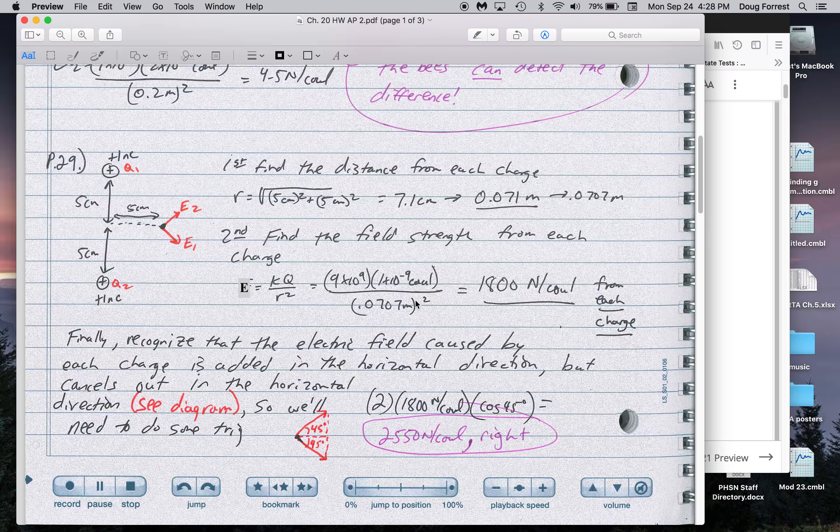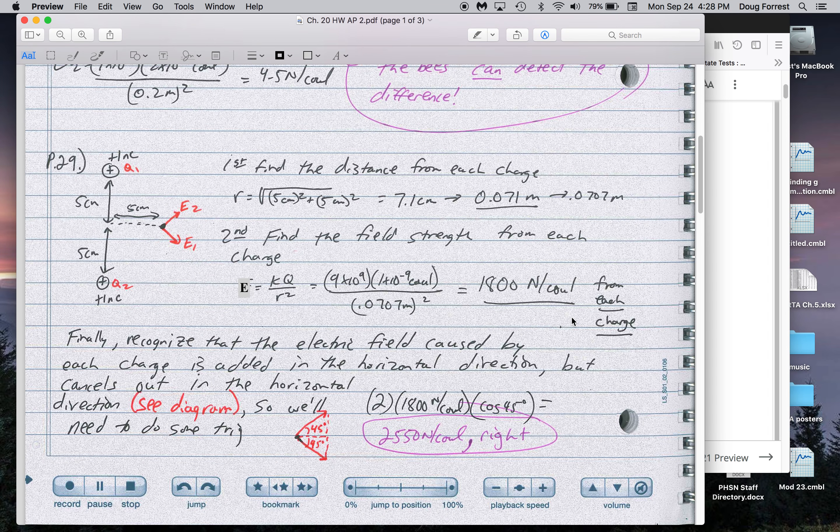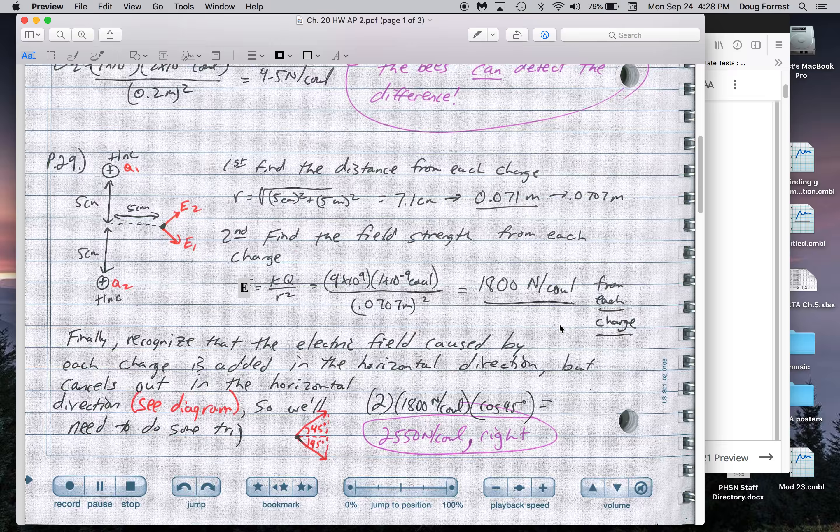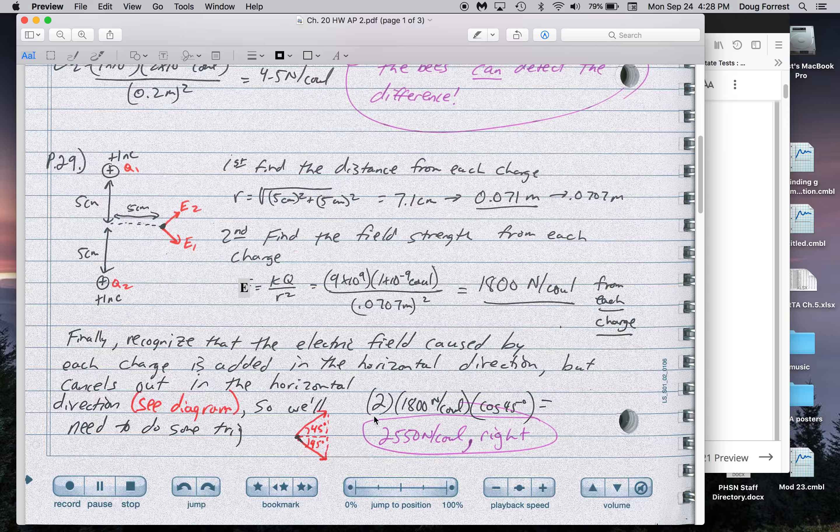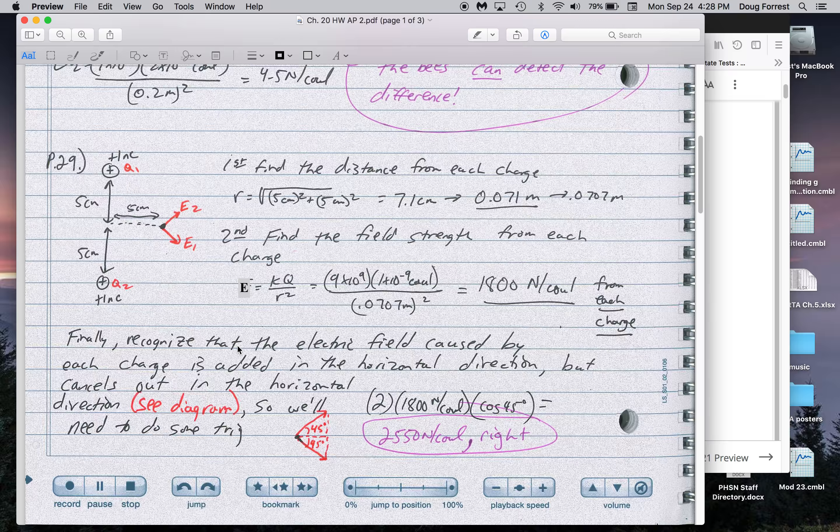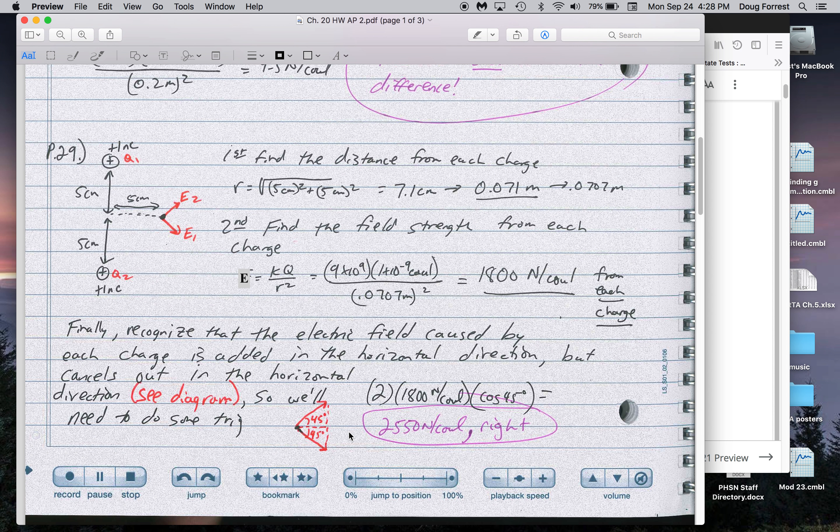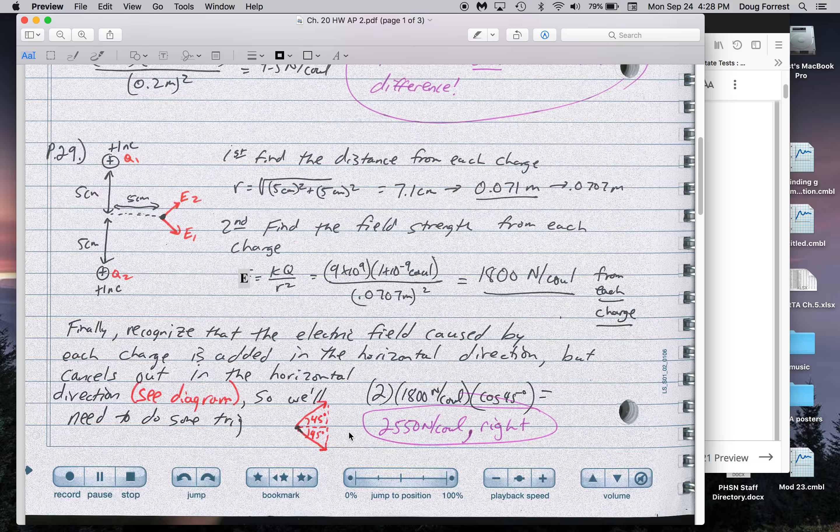So I used that and that was 1,800 Newtons per Coulomb, the field strength from either one of the charges. To figure out the horizontal components, because those are the ones that add up, I take the field strength from either one of the charges multiplied by the cosine of 45 to get the horizontal component, multiplied by 2 because both charges, Q2 and Q1, have a horizontal component which adds up. And so that gets me a total of 2,550 Newtons per Coulomb to the right.